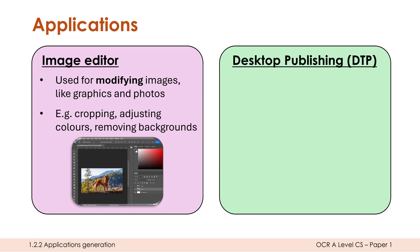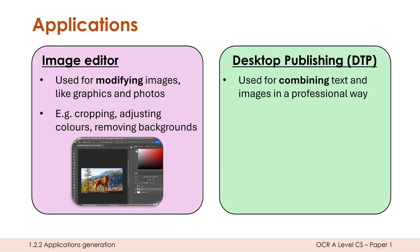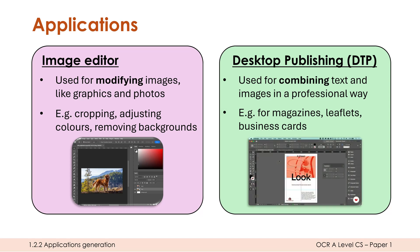DTP software — desktop publishing — you may not have heard of before. It's used in the creative industry for combining text and images together in a more professional way, for things like magazines, leaflets, business cards, and textbooks. Image editors focus on images only, and word processors focus on text only, so for complicated layouts we need DTP software. It allows you to move elements around flexibly and maintain consistent templates across editions. Examples include Adobe InDesign and Microsoft Publisher — quite specific but professional tools.